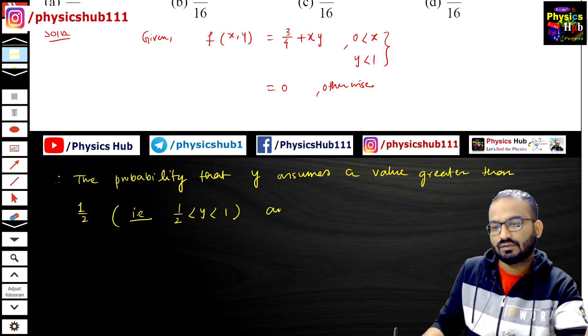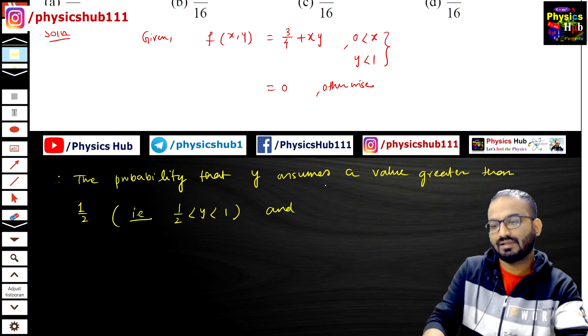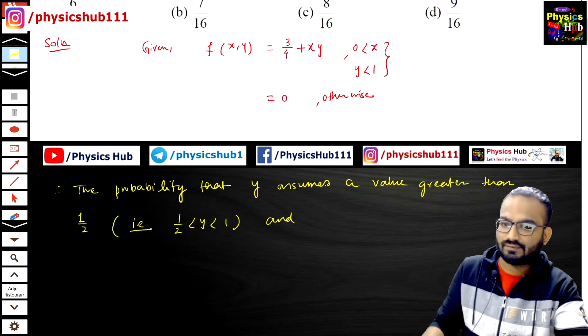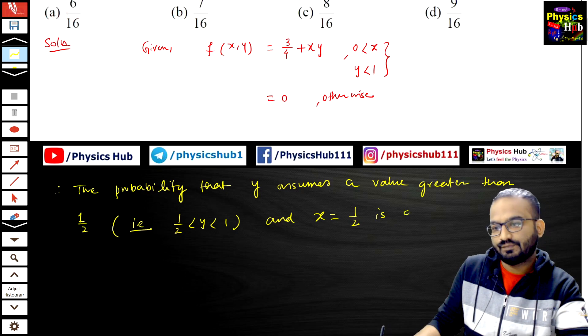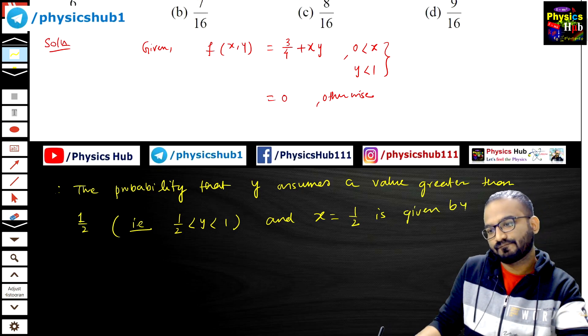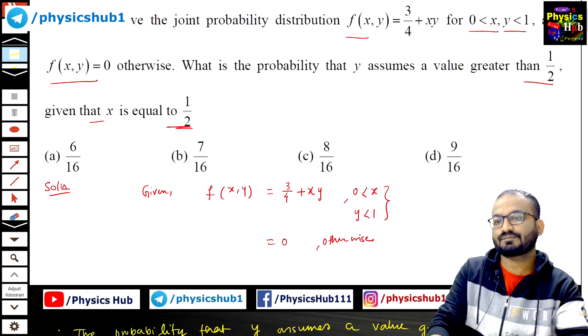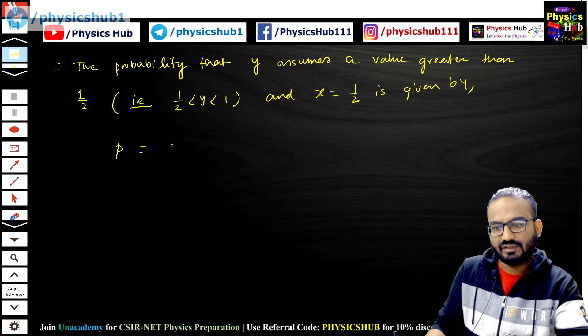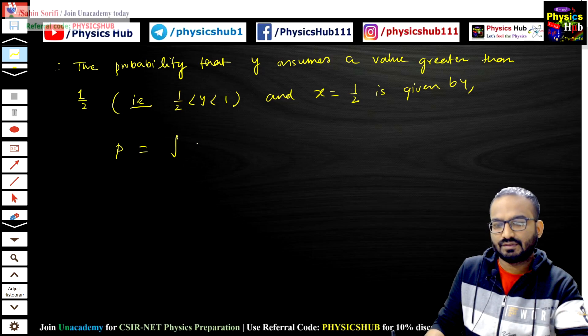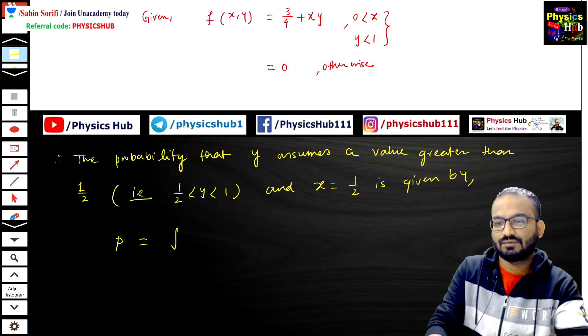This condition should be followed, and it is also given that x equals 1/2. How do you calculate probability? You have to integrate the probability density.